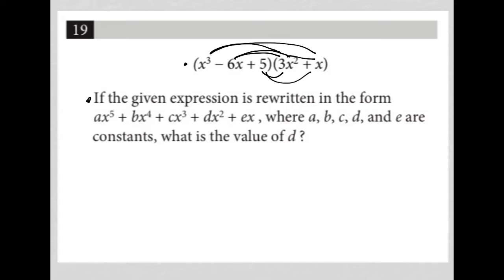So the question says, if the given expression is rewritten in the form ax to the fifth plus bx to the fourth, okay, so basically expanding, so I am going to have to simplify that, where a, b, c, d, and e are constants, what is the value of d?